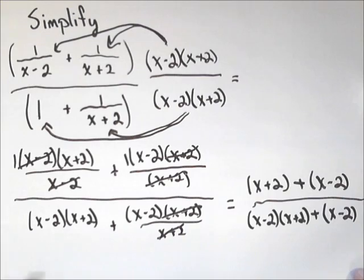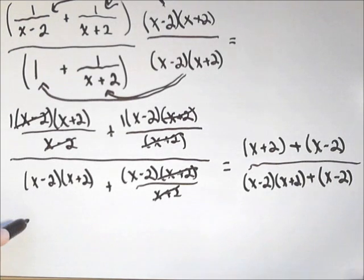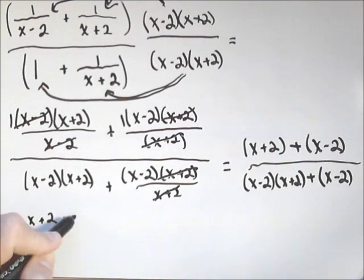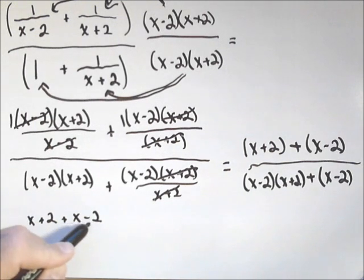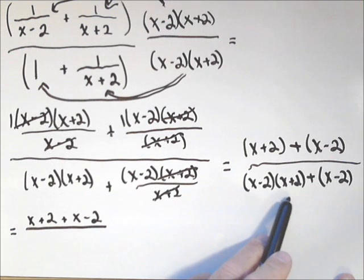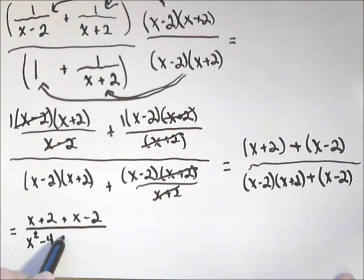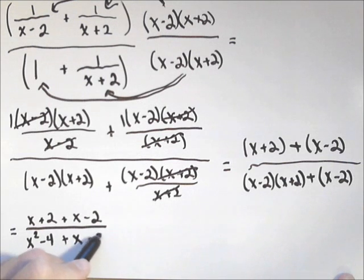So, we've got a little bit more work to do, but we're almost there. So, equals, let's come down here. We can drop the parentheses on top. I have x plus two plus x minus two. So, nothing to distribute on that second set of parentheses. And on bottom, I'm gonna FOIL these out. We have difference of squares here. So, that's gonna be x squared minus four. Then, I can drop the parentheses on the back part. X plus x minus two.